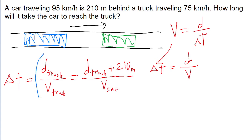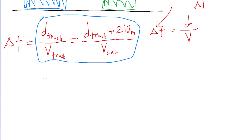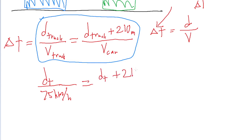This equation is pretty helpful because we're given the speeds of the truck and the car, so the only unknown is the distance the truck travels. We can algebraically solve for that. We know that D-truck divided by the truck speed of 75 kilometers per hour equals the distance the truck travels plus 210 meters, all divided by the car speed of 95 kilometers per hour.